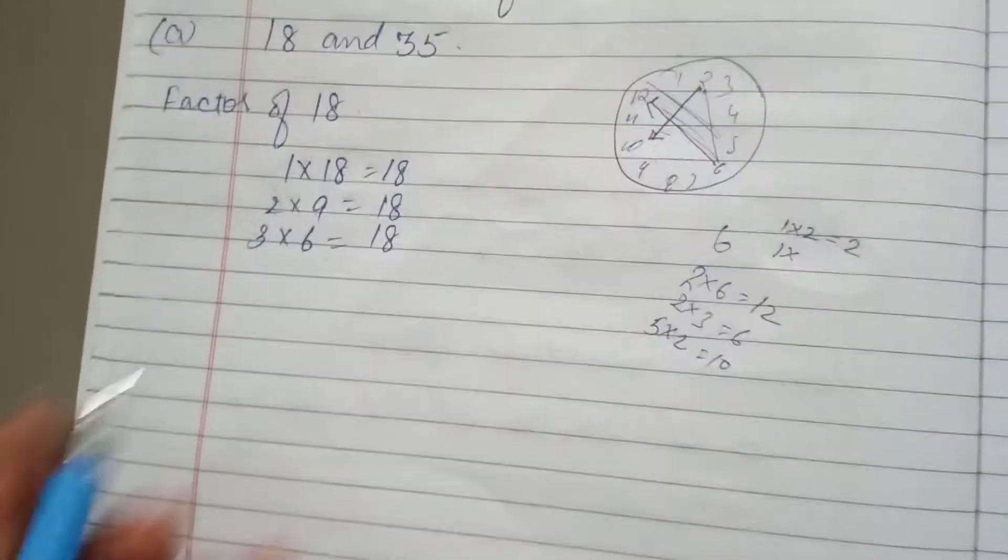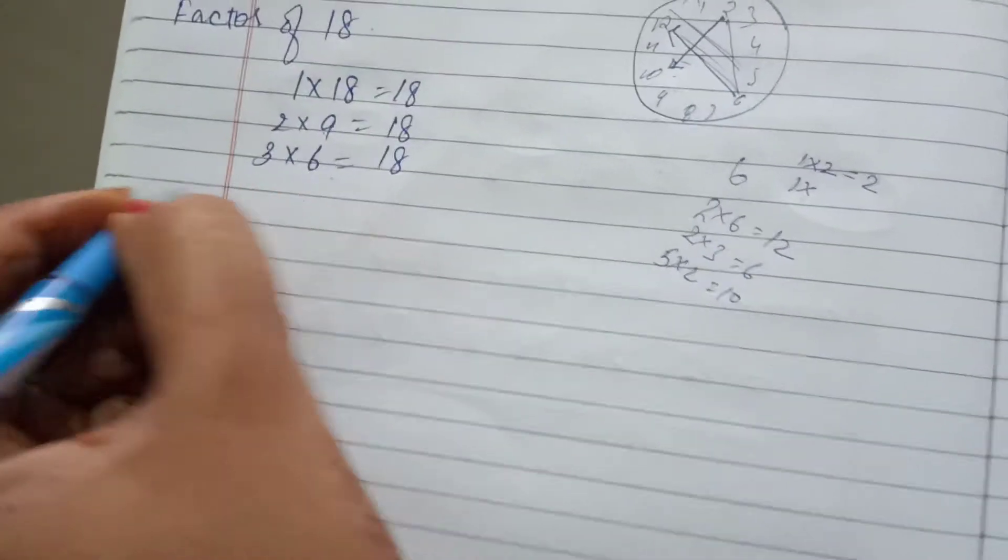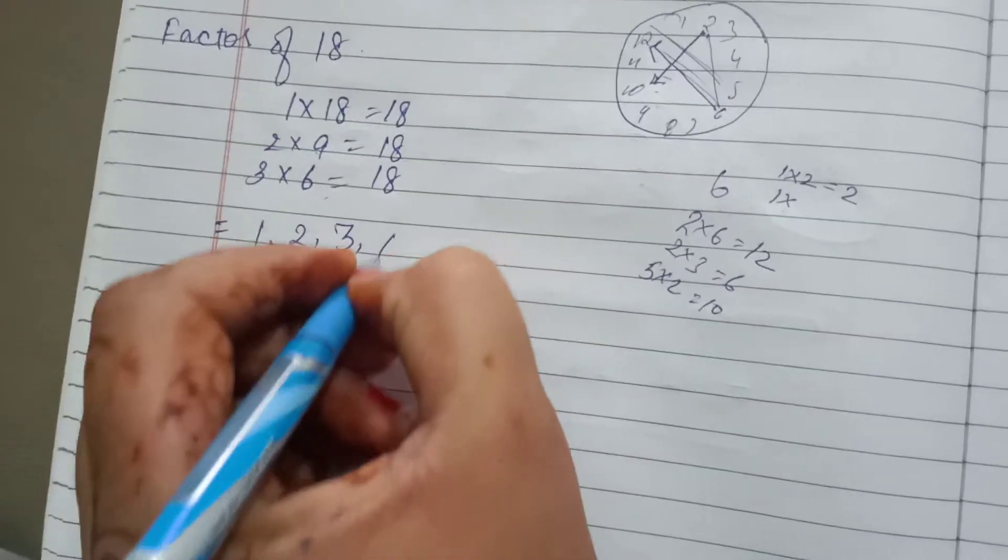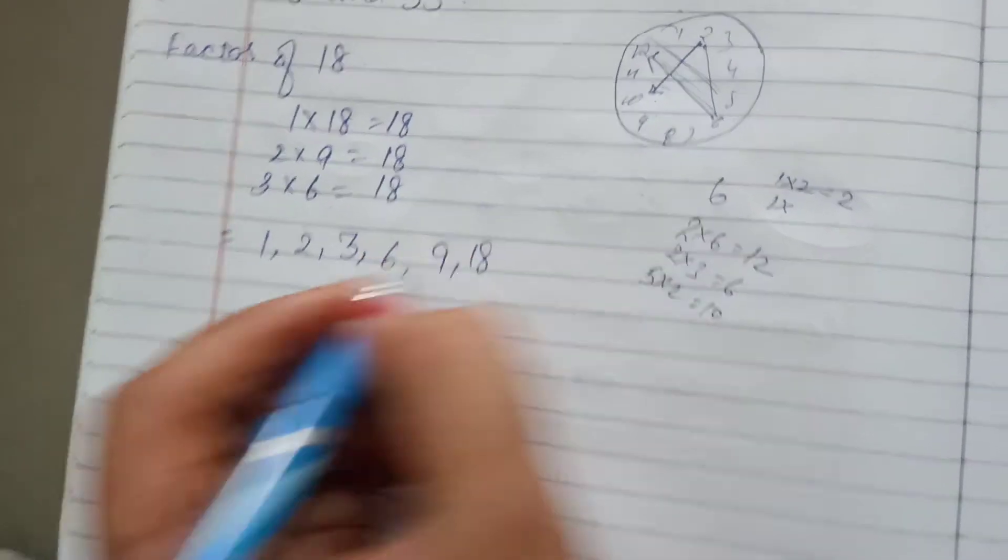So the factors of 18 are 1, 2, 3, 6, 9 and 18.